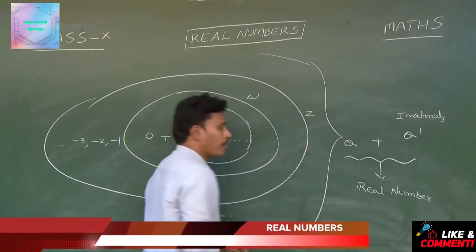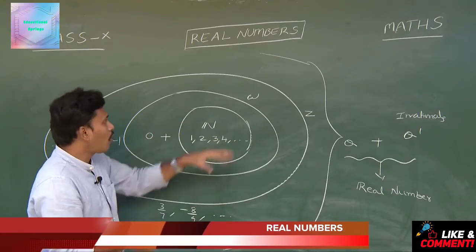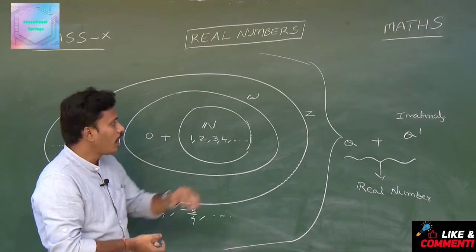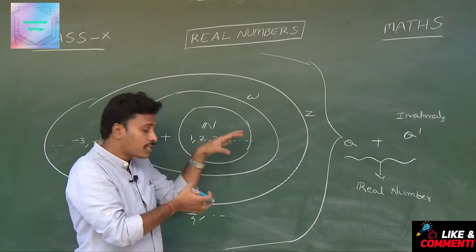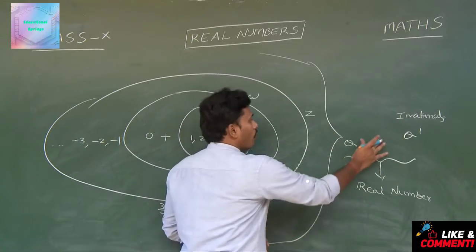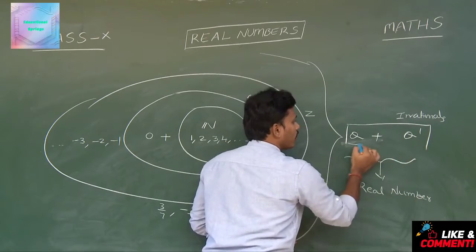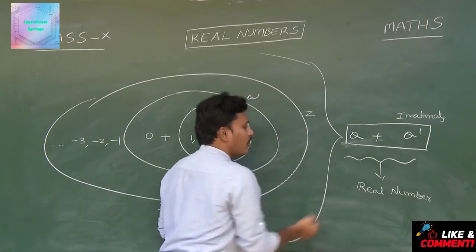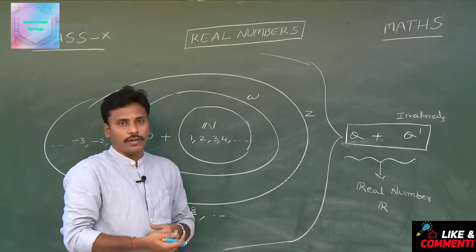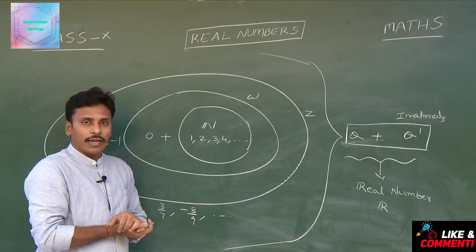It is very clear that natural numbers are part of whole numbers, whole numbers are a part of integers, and integers are a sub-part of rationals. At the end, rationals along with irrationals together are represented as real numbers, denoted by the letter R. This is the complete analysis of the classification of the number system.